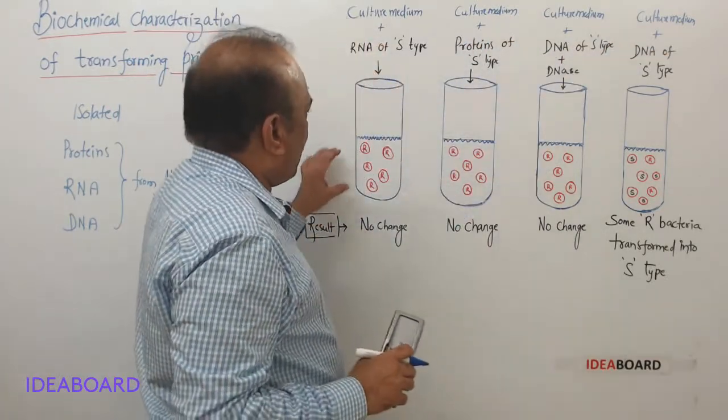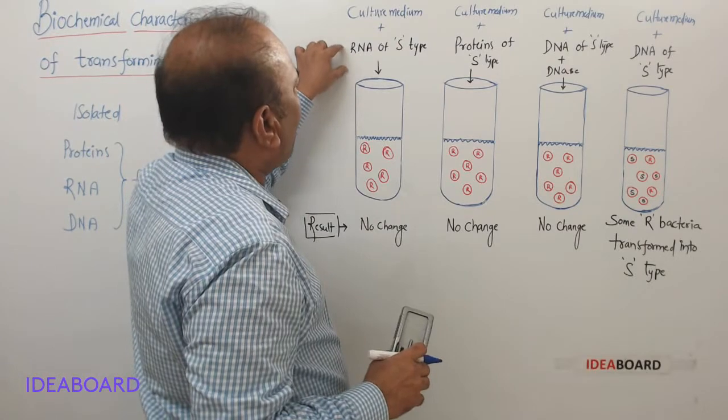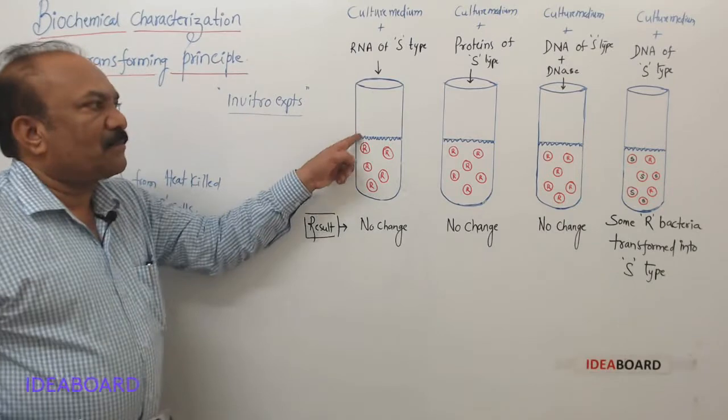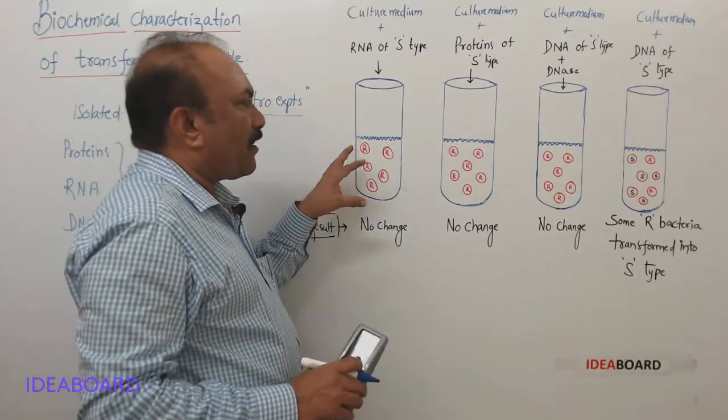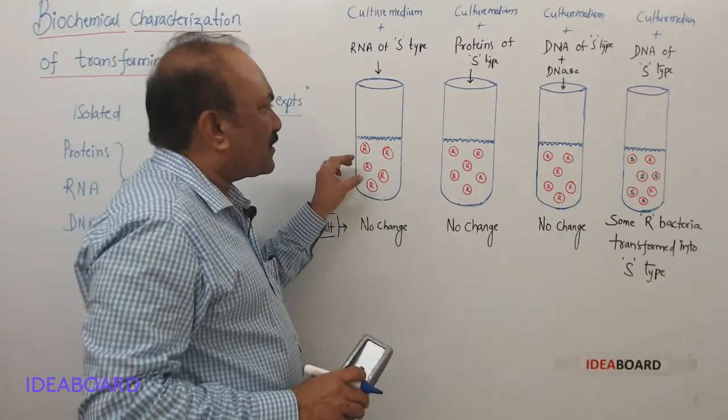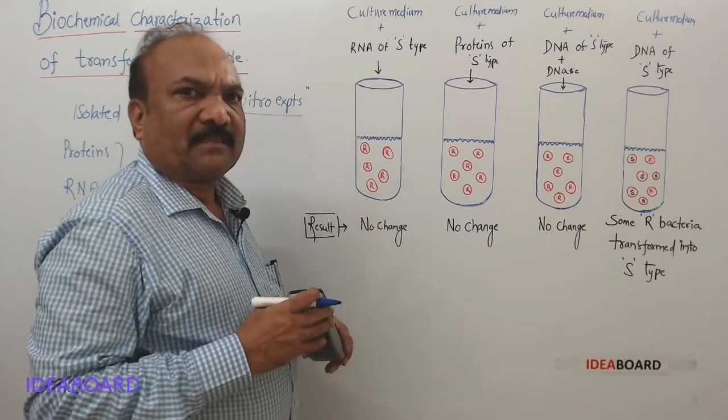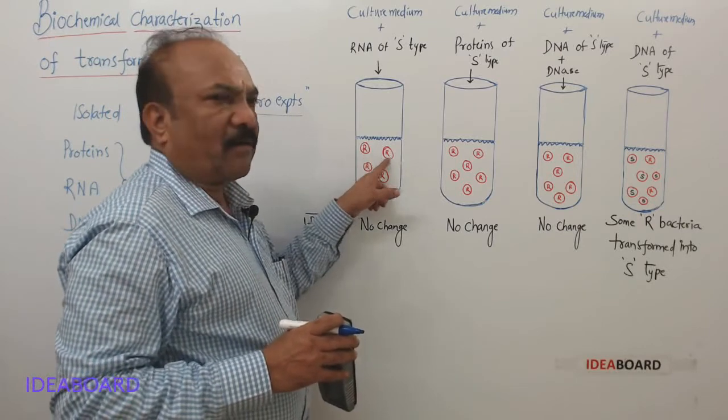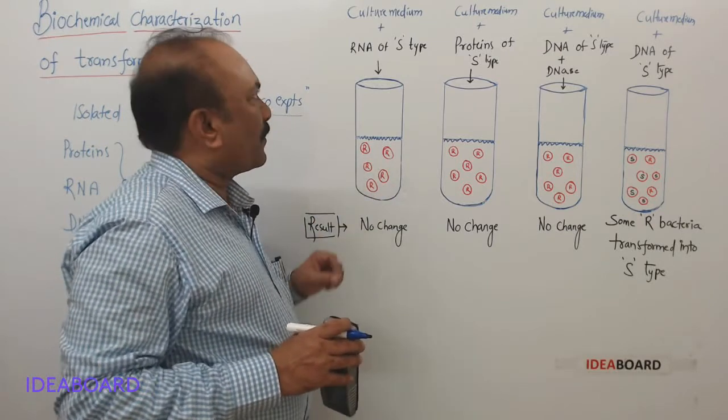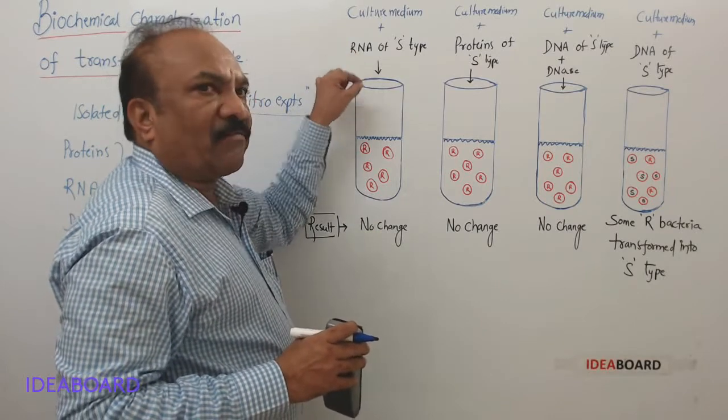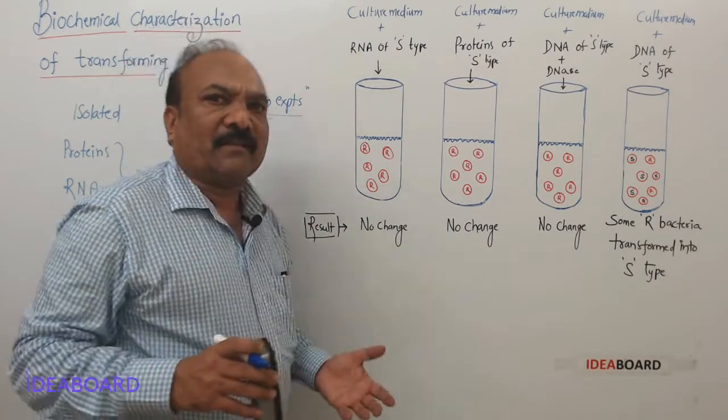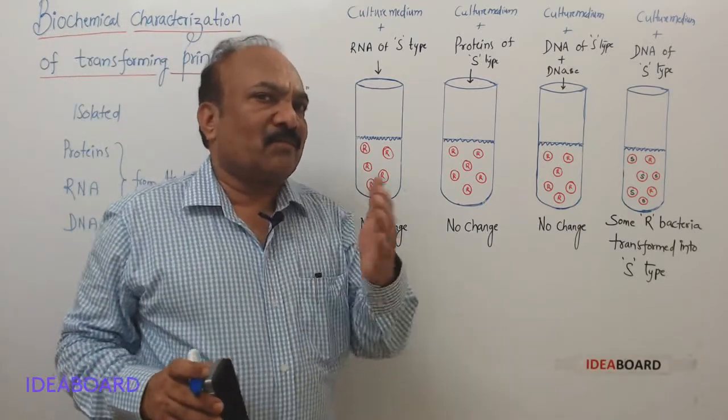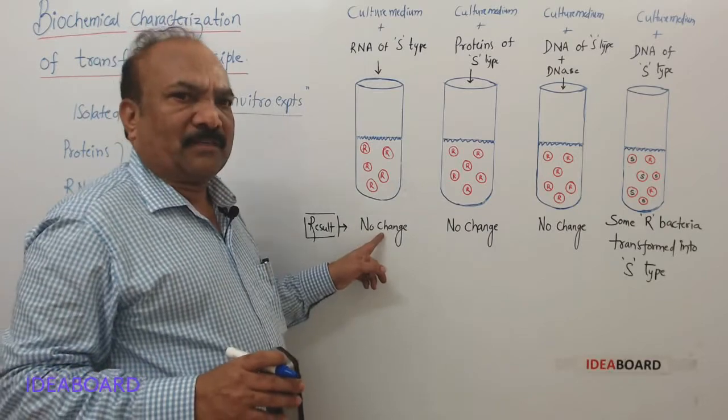Here they have added RNA of S type. In the medium, they have already kept which cells? R cells, that is rough cells which are harmless. You can see R cells are here. They have added this RNA of S type, and they want to see whether these R cells are going to change into S cells or not. But there was no change.